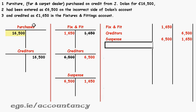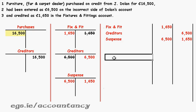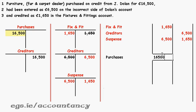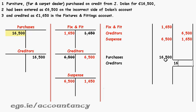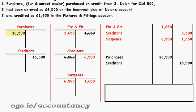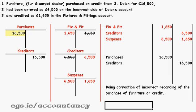Now it's time to write it up properly. We'll need purchases, and we'll put it on the left: 16,500. And we'll need creditors — we'll put it on the right: 16,500. Finally, we'll put in our sentence about what we did, and that will finish the question.